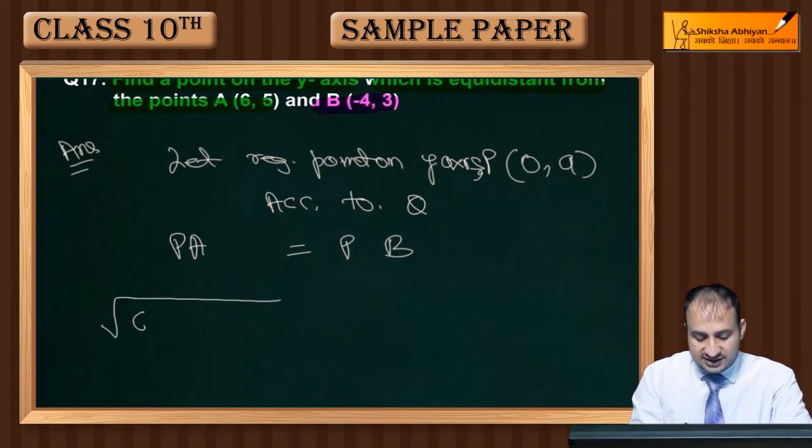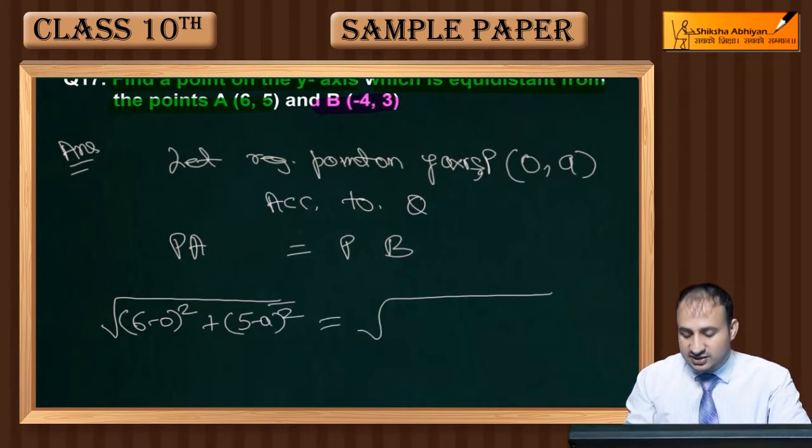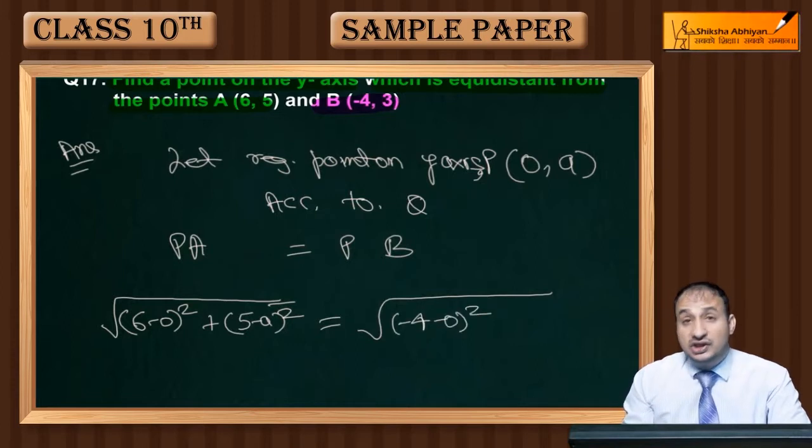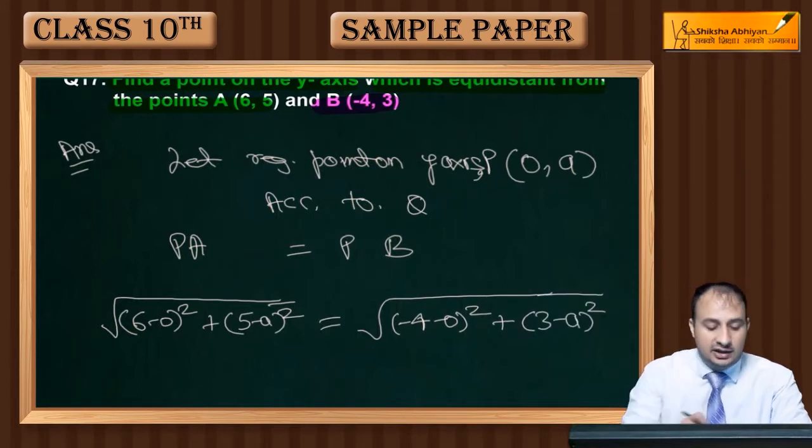So this comes out to be √[(6-0)² + (5-a)²] equal to PB, which is √[(-4-0)² + (3-a)²]. Using the distance formula, we get √[36 + (5-a)²] = √[16 + (3-a)²].